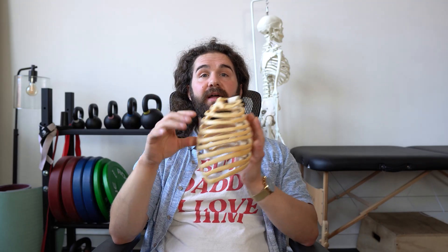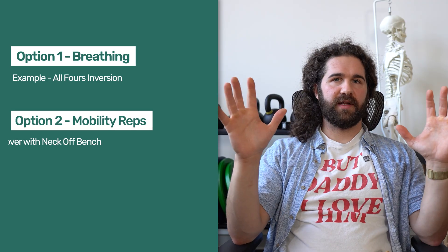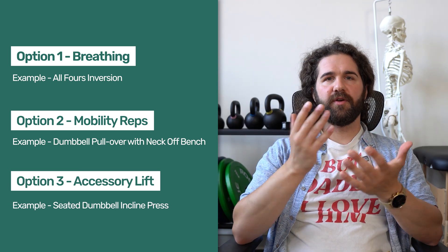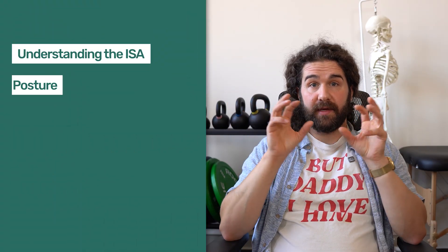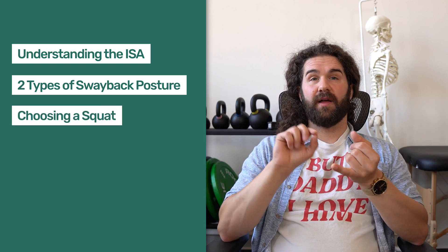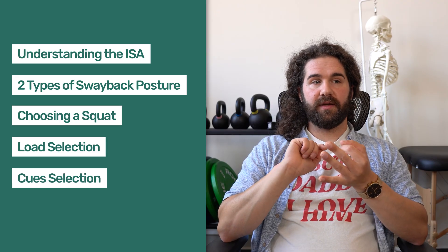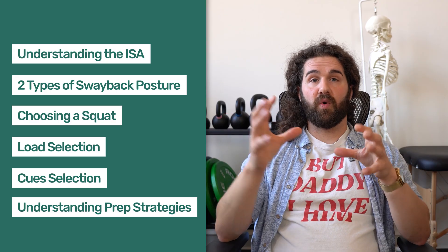The best prep strategy for this kind of person is something with arms overhead that allows us to extend the thoracic spine, lift the ribs, and lift the sternum. Do that for a couple of rounds — breathing, reps, however you want to do it — as an accessory first. Then go into your squats from there; you'll have more access to those positions. Then think about which squat to do, what load to select, how that's impacting what you're seeing, and choose your rep ranges, set ranges, and progressions based on maintaining that favorable position and shape.